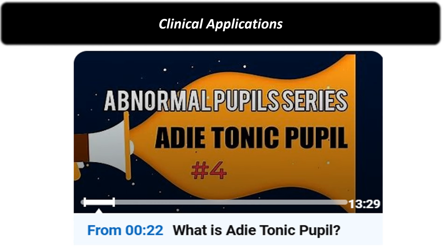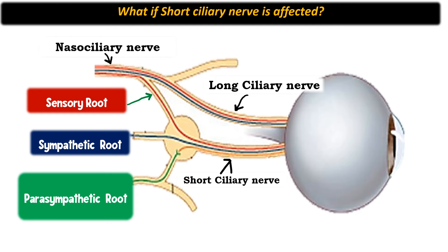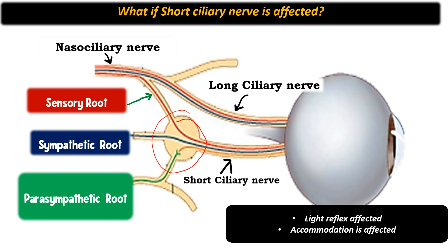Whenever the ciliary ganglion gets affected, a condition known as Adie's tonic pupil is seen. In this condition there is a very tonic, slow constriction of the pupil to the light reflex, but a good accommodation reflex. When the short ciliary nerves are affected, you need to damage all or the majority of them to get parasympathetic dysfunction, as there are many short ciliary nerves. If the ciliary ganglion is affected, both the light reflex and the accommodation reflex are affected. Since most short ciliary nerves supply the sphincter pupillae, the light reflex is affected much more than the accommodation reflex.